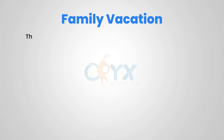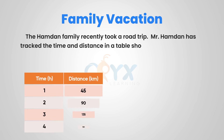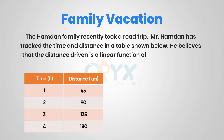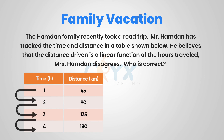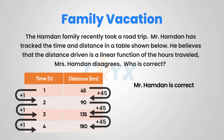Back to our family vacation. The Hamdan family recently took a road trip. Mr. Hamdan has tracked the time and distance in a table shown below. He believes that the distance driven is a linear function of the hours traveled, and Mrs. Hamdan disagrees. Who is correct? Looking at the time in hours, we can see that from 1 to 2, 2 to 3, and 3 to 4, there is a constant change of 1. Looking at the distance in kilometers, from 45 to 90, 90 to 135, and 135 to 180 is also constant — an increase of 45 each time. So because we have this constant rate of change, Mr. Hamdan is correct. It is a linear function with a constant rate of change of 45 over 1, or 45 kilometers per hour.